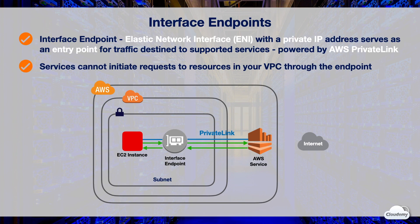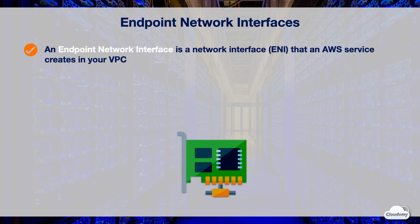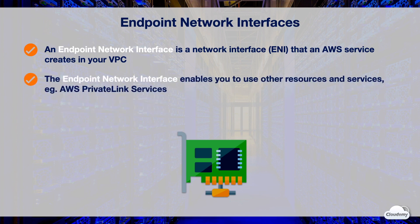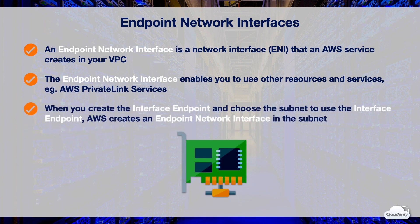Services cannot initiate requests to resources in your VPC through the endpoint — an endpoint only returns responses to traffic that is initiated from resources in your VPC. An endpoint network interface is a requester-managed network interface that an AWS service creates in your VPC. This is a special type of ENI created and managed by AWS services. When you create the interface VPC endpoint and choose the subnet, AWS creates an endpoint network interface in the subnet.